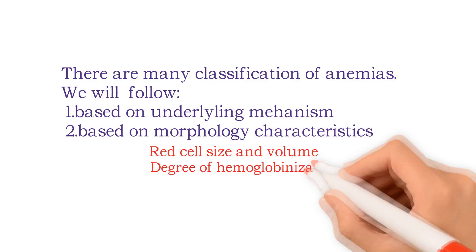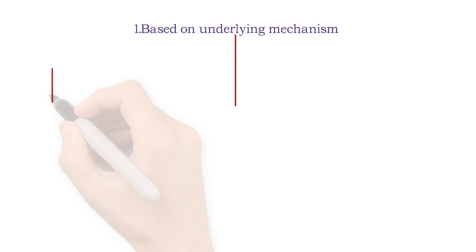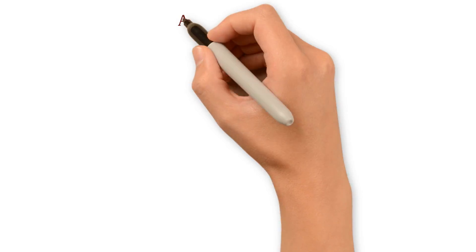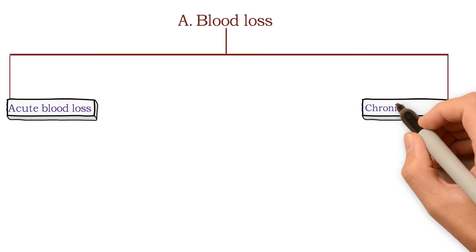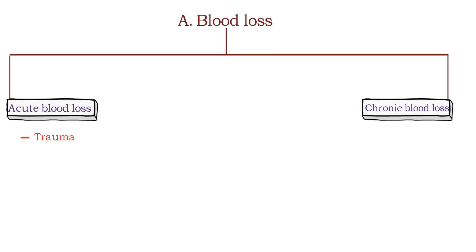Based on underlying mechanism, which includes blood loss, hemolysis, and decreased red cell production. In blood loss, there are acute blood loss and chronic blood loss. Acute blood loss is mainly caused by trauma, and chronic blood loss mainly caused by gastrointestinal tract lesions and gynecologic disturbances.